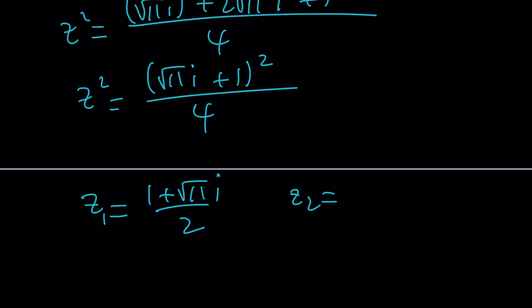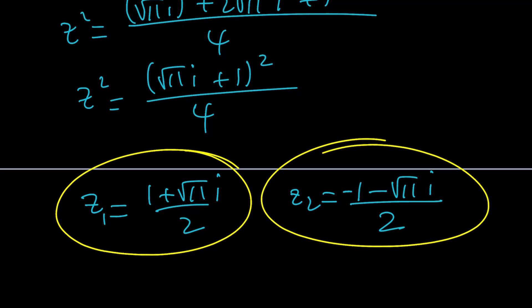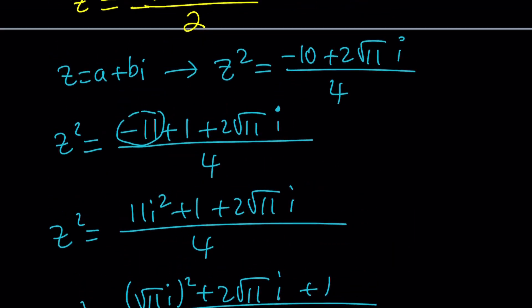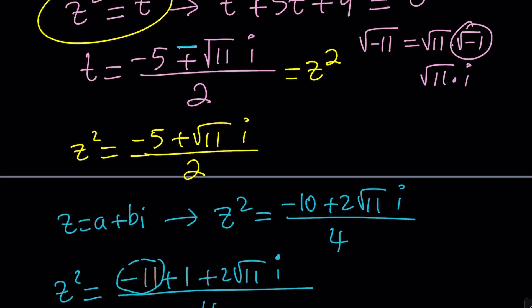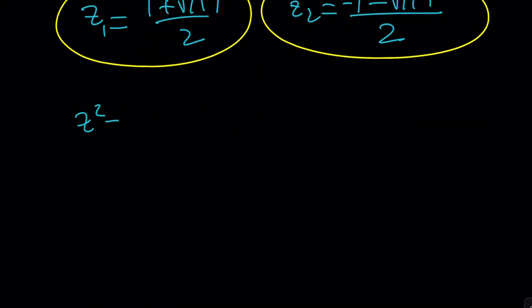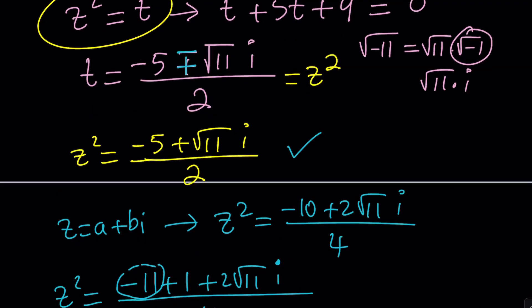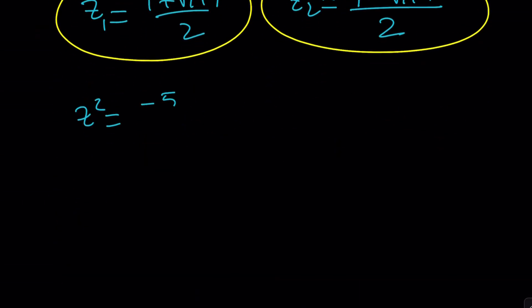One plus root 11 i over 2 is z sub 1, and z sub 2 is negative one minus root 11 i over 2. Those are the solutions from the first case. But there are two cases. Let's take a look at the second one with the minus sign. We're going to do the exact same thing.